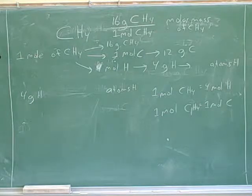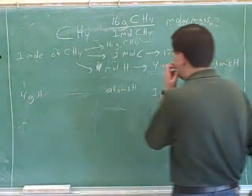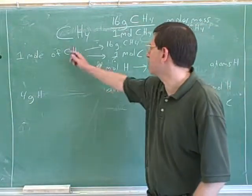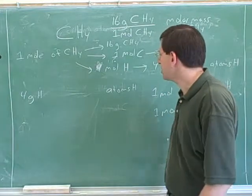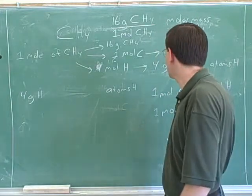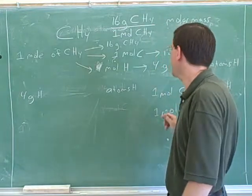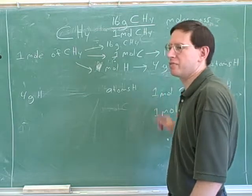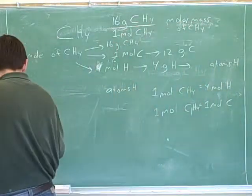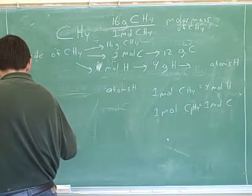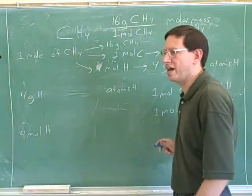What are our starting units here? One mole of hydrogen. Remember that we had four moles of hydrogen. We don't actually have to convert from grams to moles — we already know how many moles of hydrogen we have. We don't need to convert into moles of hydrogen because we already worked that out.